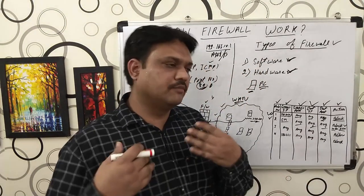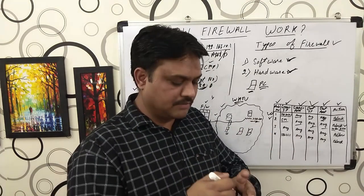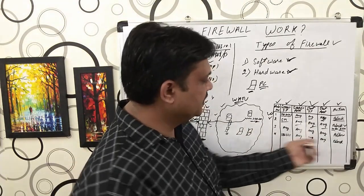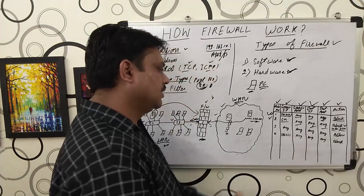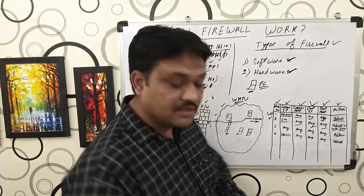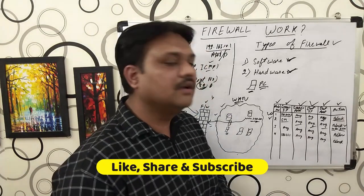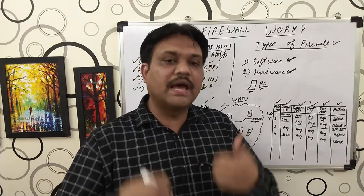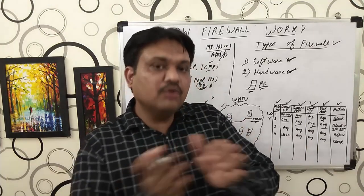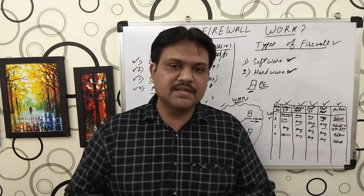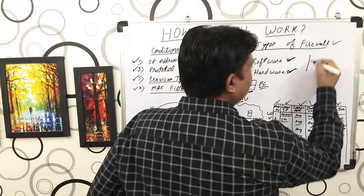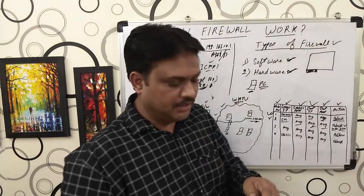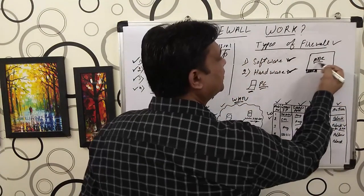After configuring block conditions, it is very important to also allow some traffic. Because if you don't add an allow condition, by default the firewall will block everything. Let me give an analogy: imagine a company with a gate, a security guard standing outside. The company has given the guard a list of names — only people whose names are on the list can enter. If a name is not on the list, that person will not be allowed inside the company.